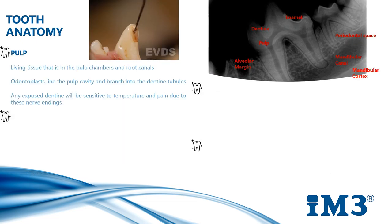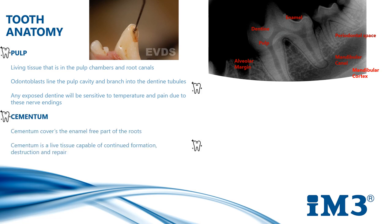Pulp is a living tissue that is in the pulp chamber and root canals. It's vascularised and comprises connective tissue, blood, lymph vessels, nerves, collagen and odontoblasts. Odontoblasts line the pulp cavity and branch into the dentine tubules. Any exposed dentine will be sensitive to temperature and pain due to these nerve endings.